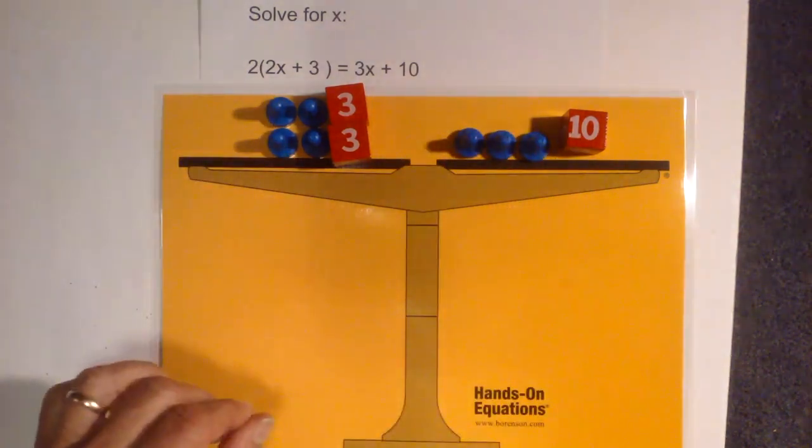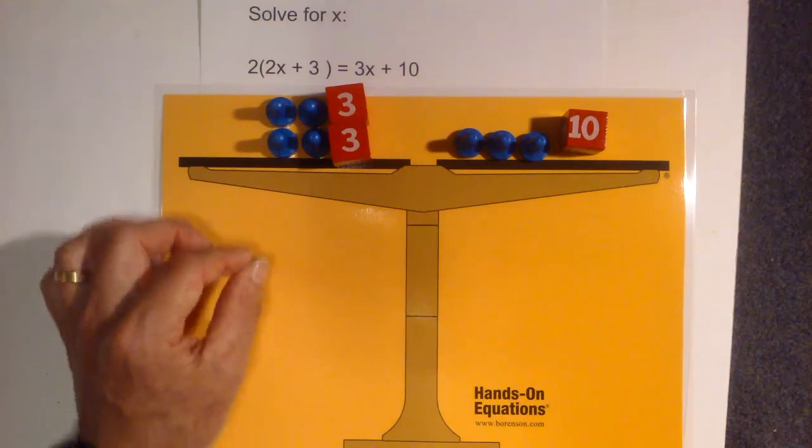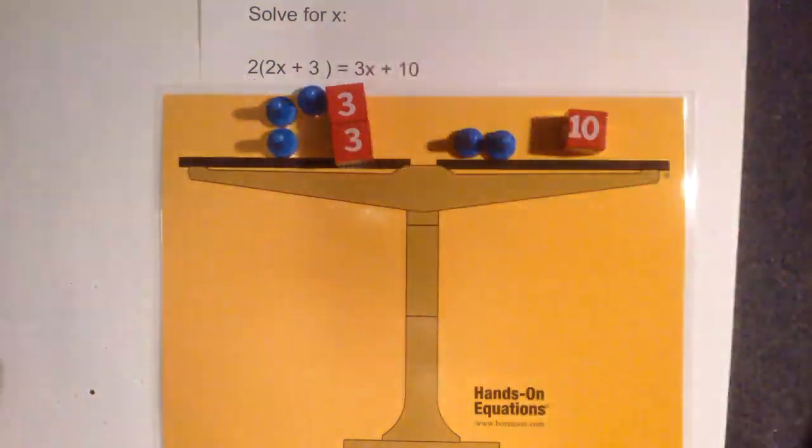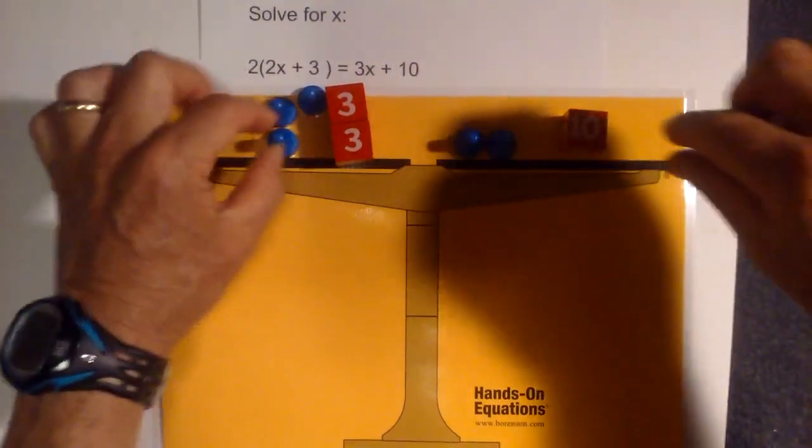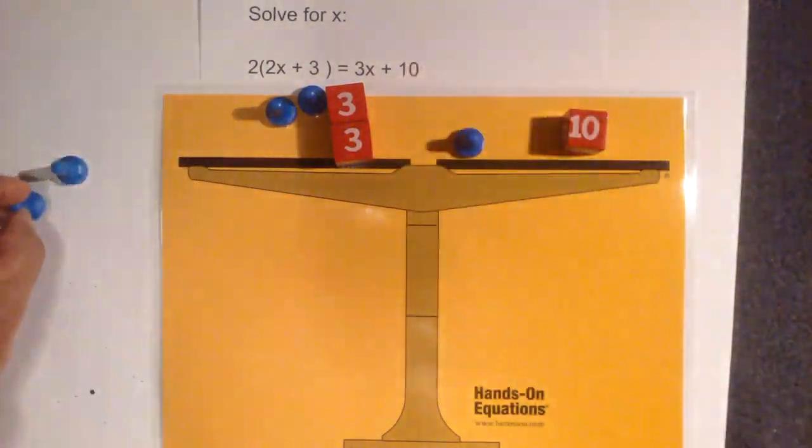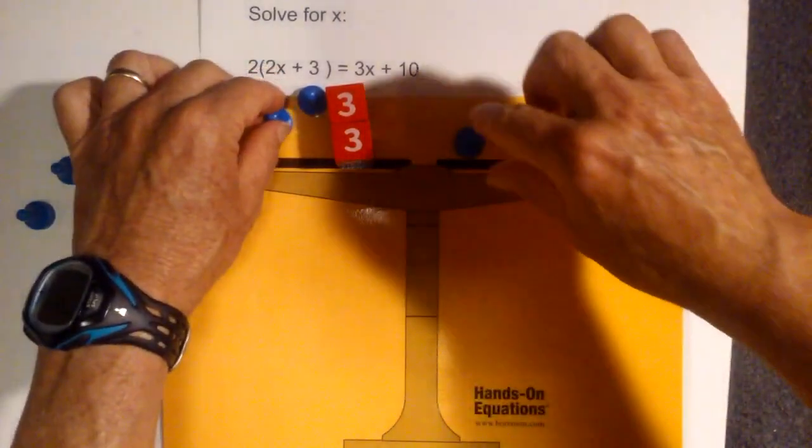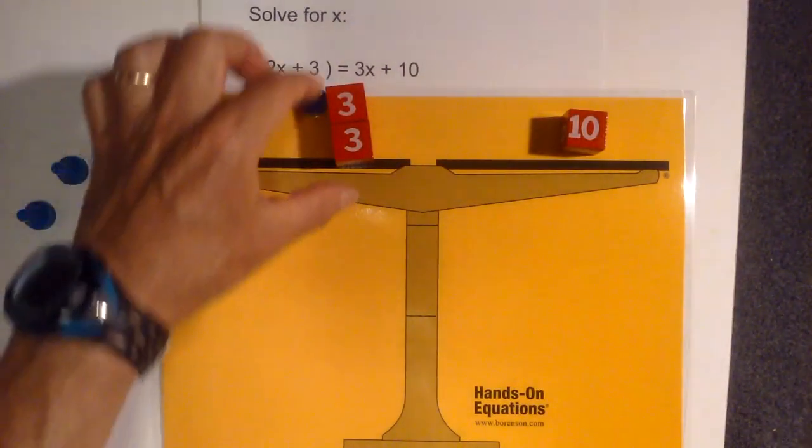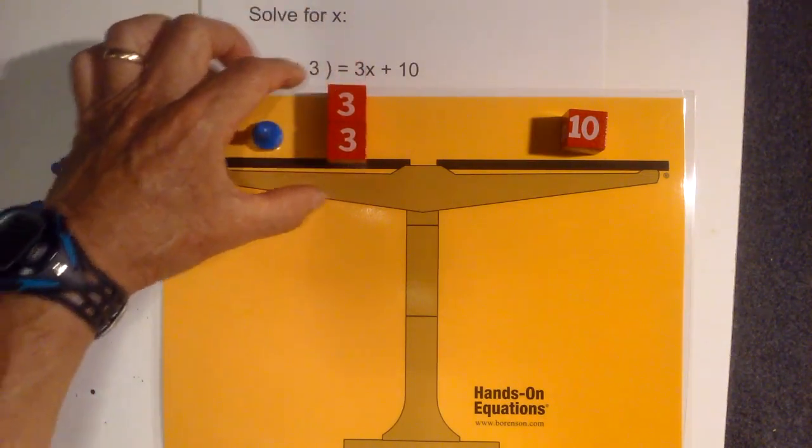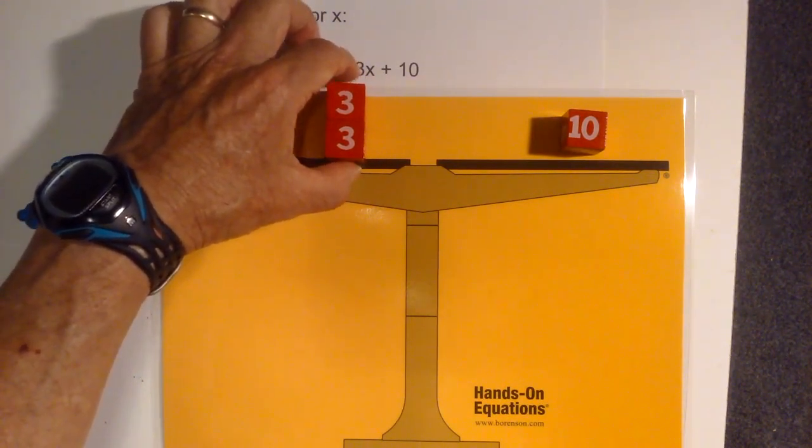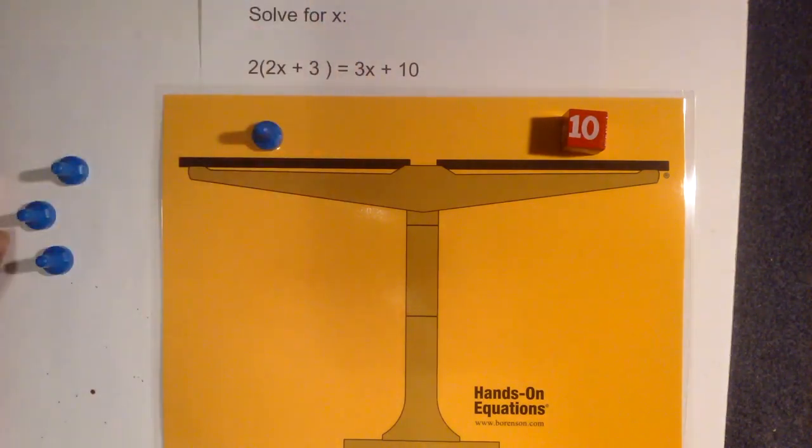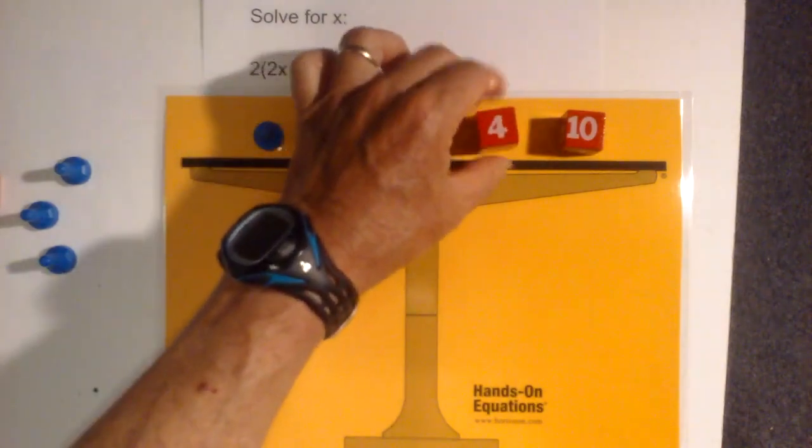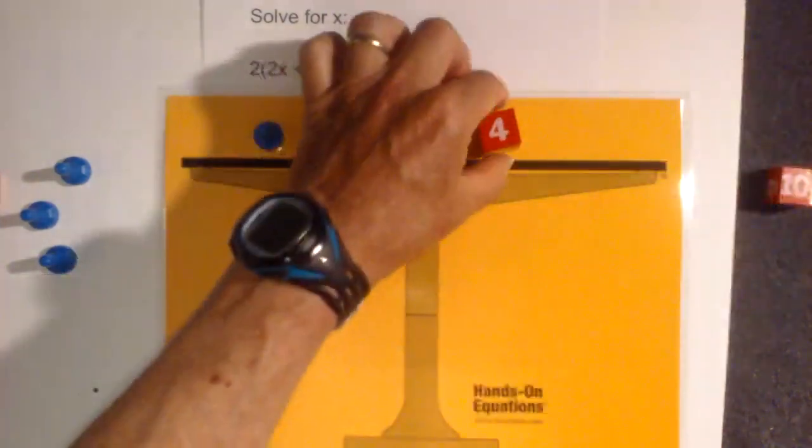Now I can complete legal moves to simplify, so I'm going to remove 1x, I'm going to remove 2x's, and I'm going to remove 3x's. Now I can remove numbers, so I'm going to remove 6, and remove 6 from this side. 10 minus 6 is 4.